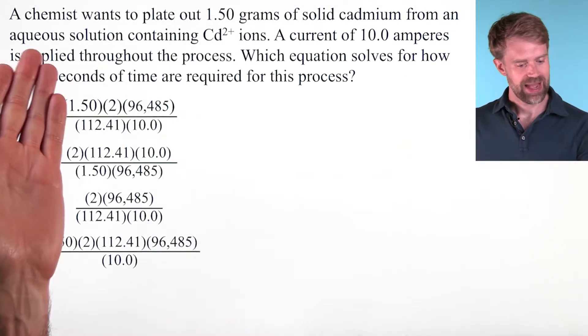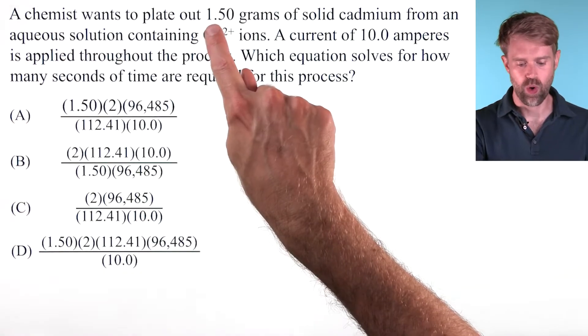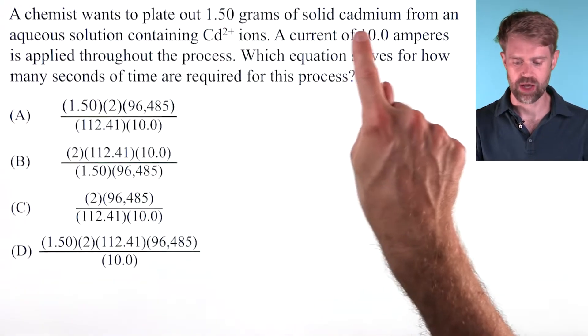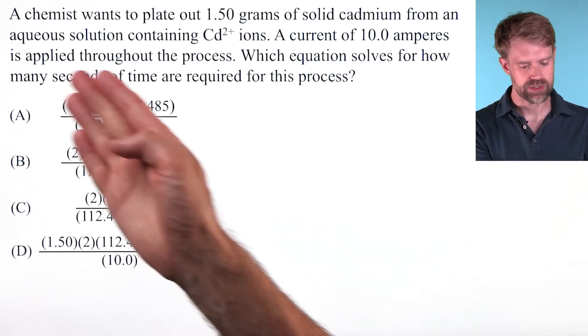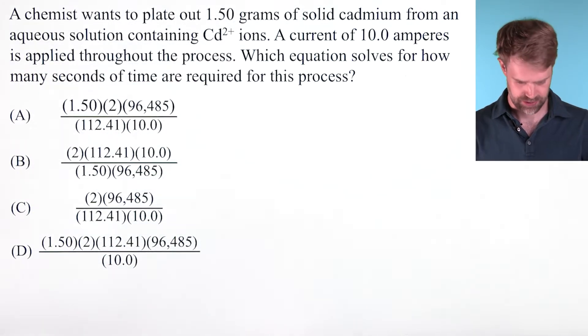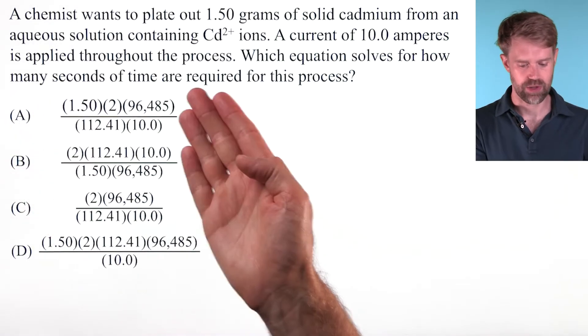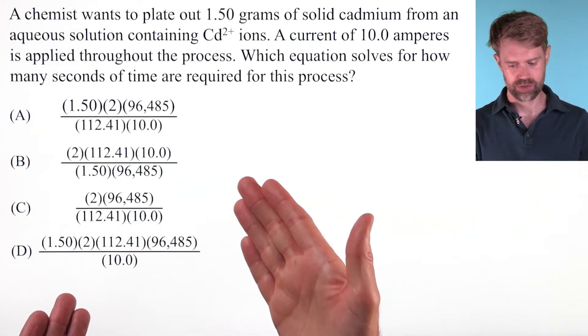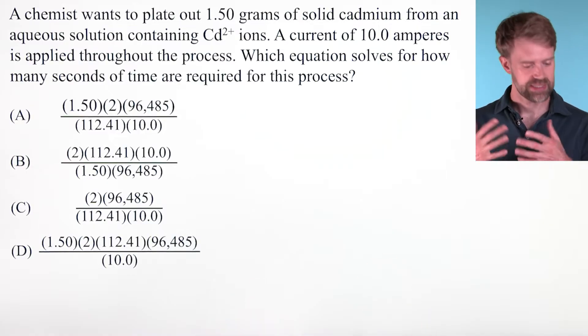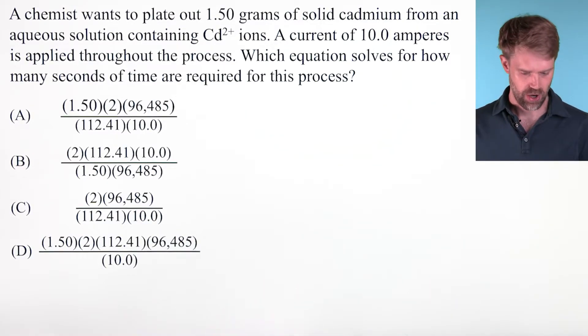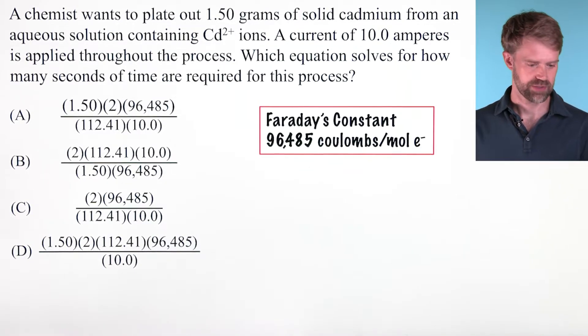A chemist wants to plate out 1.50 grams of solid cadmium from an aqueous solution containing Cd²⁺ ions. A current of 10 amperes is applied throughout the process. Which equation solves for how many seconds of time are required for this process?